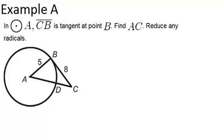In example A, it says in circle A, CB is tangent at point B. So this segment right here is tangent to the circle at point B, so point B is the point of tangency.